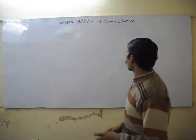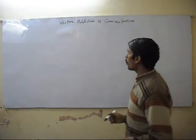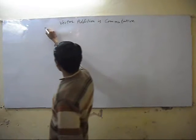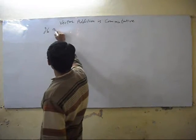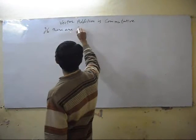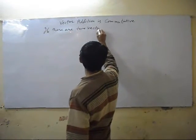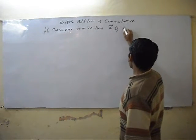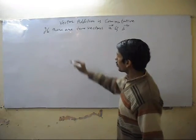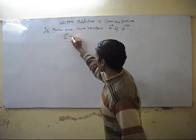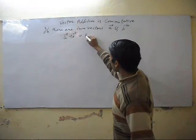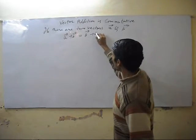Now we have to prove that if there are two vectors A and B, its addition A vector plus B vector will equal to B vector plus A vector.